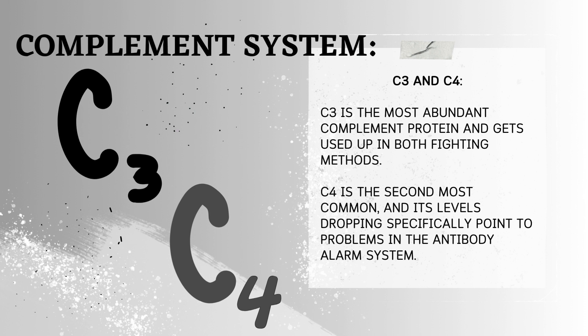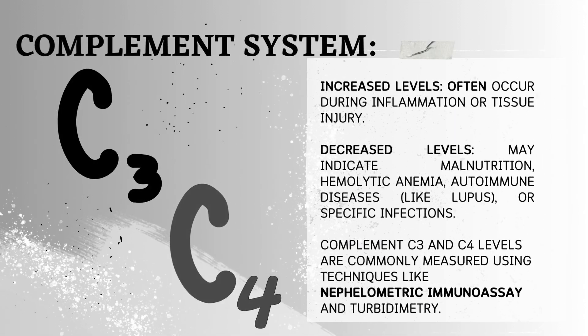C3 and C4 — important players. C3 is the most abundant complement protein and gets used up in both fighting methods. C4 is the second most common, and its levels dropping specifically point to problems in the antibody alarm system. Complement levels go up during inflammation or tissue injury. They may drop with malnutrition, anemia, autoimmune diseases, or certain infections. Techniques like nephelometry and turbidimetry can measure C3 and C4 levels in your blood.